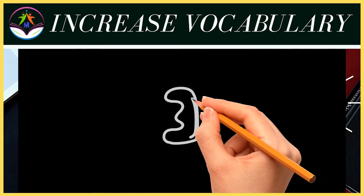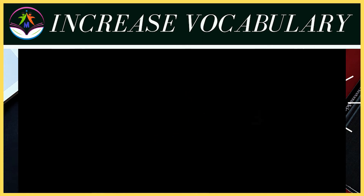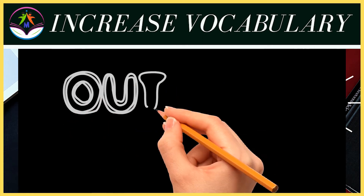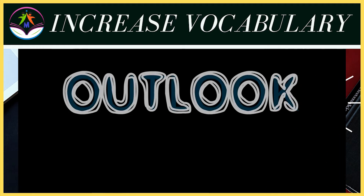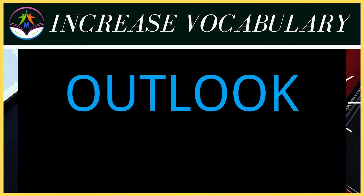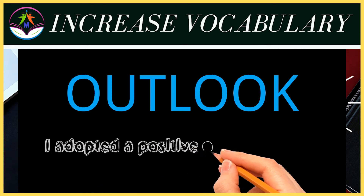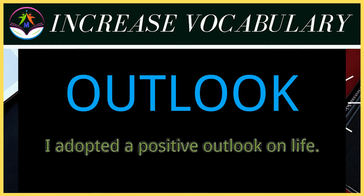Our third word is outlook. The meaning of outlook is dekhne ka nazariya ya drishti koon. And the sentence for outlook: 'I adopted a positive outlook on life.' Mane jeewan par sakaratmak drishti koon apnaaya.